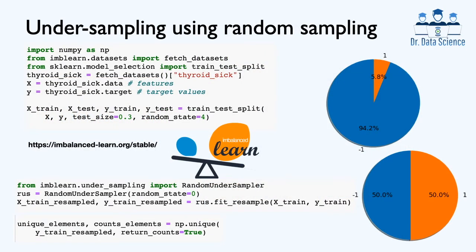To understand how we can implement this simple type of undersampling, let's work with the thyroid dataset, which consists of about 6% positive or +1 target values and the remainder are labeled as negative, forming the majority class. We use train_test_split from scikit-learn to divide the dataset into training and test sets. To implement undersampling and other popular imbalanced learning strategies, we use the ImbalancedLearn library, which is an open source library developed in Python and can be downloaded from the link provided.